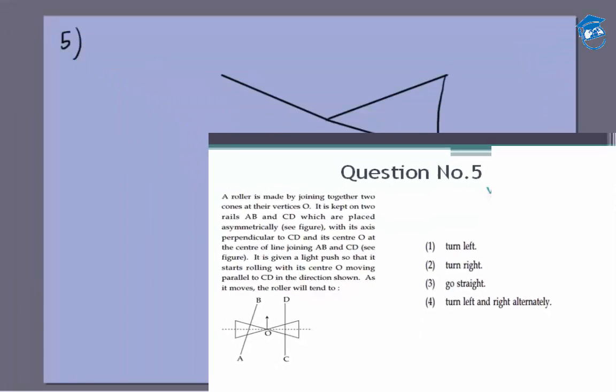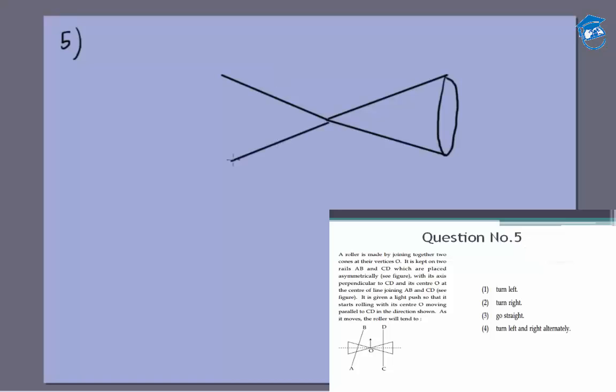These are the two cones which are joined. The question says that the two rails are not parallel but they are equidistant. Let's assume for a second that they are not equidistant.